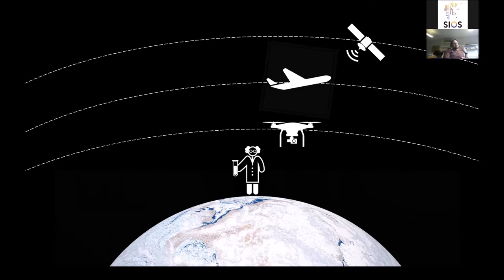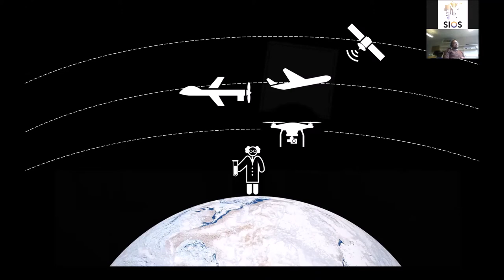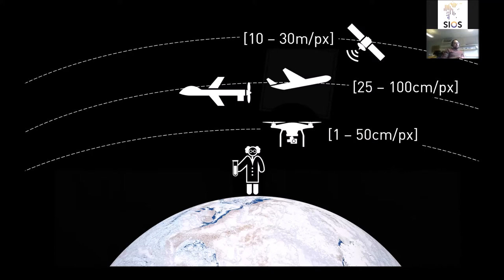This is where smaller drones come into play — they help elevate ground-based observations to a higher level and help close the gap between satellite-based remote sensing and ground observations. Larger, more complex drones can also actually replace costly aircraft-based campaigns at a much more reasonable price, with potentially even higher flexibility.